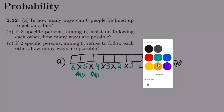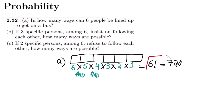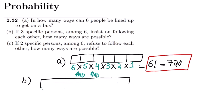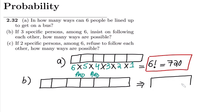The answer to Part A is 720. Now Part B: if three specific persons among six insist on following each other, how many ways are possible? We again have six persons. Let me draw another block for these six persons. Three of them want to follow each other, so let me identify those three persons here.